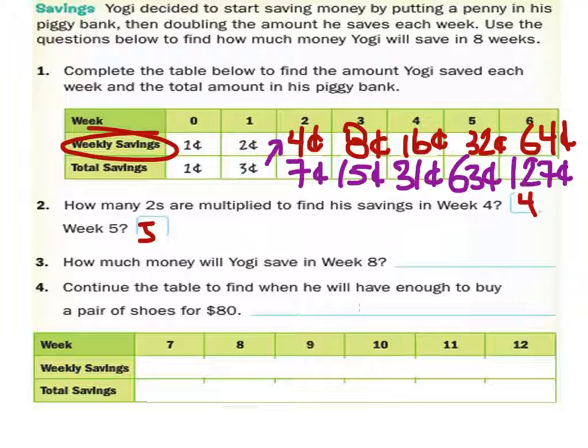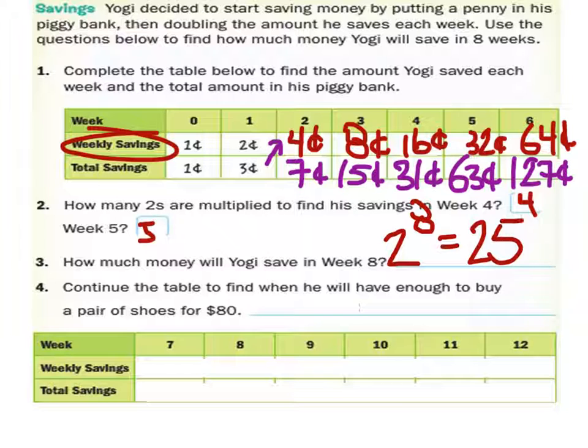The bank would be two to the power of eight, which is what? Two hundred and fifty-six, right?